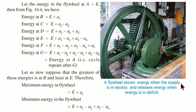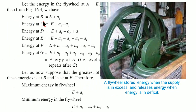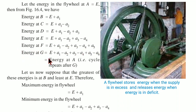A flywheel stores energy when the supply is in excess and releases energy when energy is in deficit. Let the energy in the flywheel at A be equal to E. Then from figure 16.4: energy at B is E plus A1; energy at C is E plus A1 minus A2; energy at D is E plus A1 minus A2 plus A3; energy at E is E plus A1 minus A2 plus A3 minus A4; energy at F is E plus A1 minus A2 plus A3 minus A4 plus A5; and energy at G is E plus A1 minus A2 plus A3 minus A4 plus A5 minus A6.